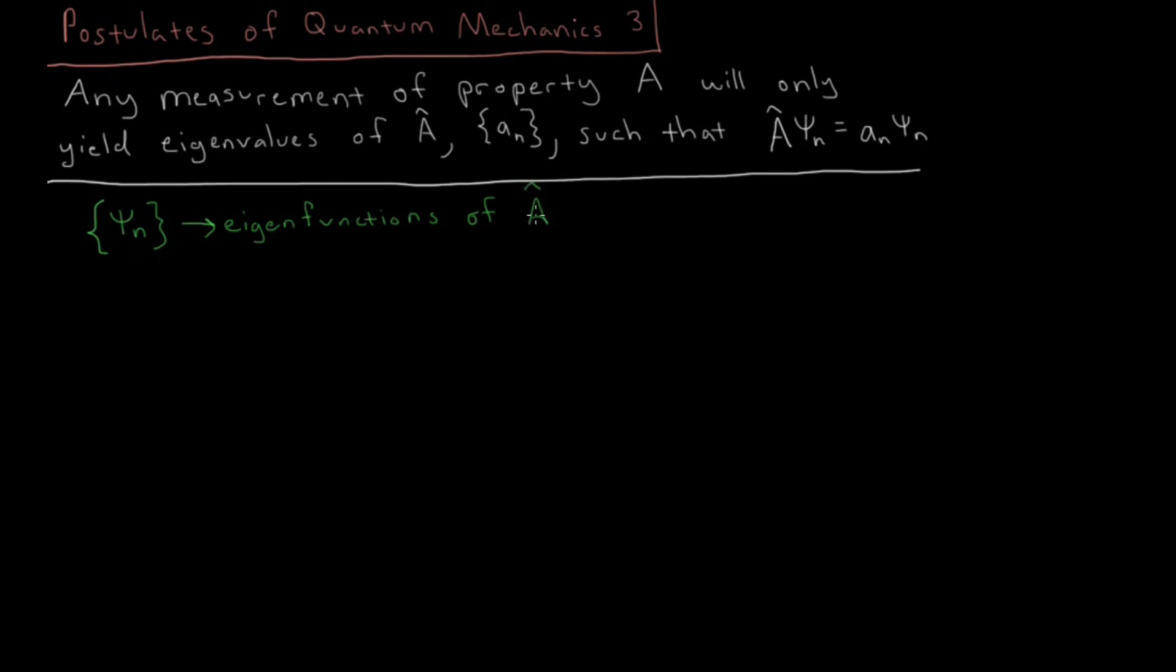So if A was energy, and the operator was the Hamiltonian operator for total energy, then we would have this set of wave functions, our eigenfunctions, of that Hamiltonian, and that was how we solved the Schrodinger equation, by solving for the eigenvalue problem where this operator was H, the Hamiltonian operator.